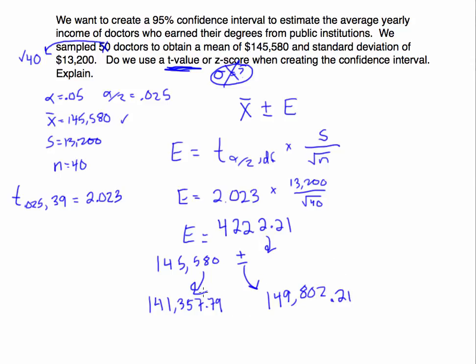This is the lower bound and upper bound for our confidence interval. We would say mu would be between here. If we wrote this as an inequality, this was our estimate. To interpret this, we are 95% confident that the true population parameter, in this case the mean, the average salary of all doctors from public institutions, is contained between these two values of $141,000 approximately up to approximately $149,800. These are the lower bound and upper bound for our confidence interval.